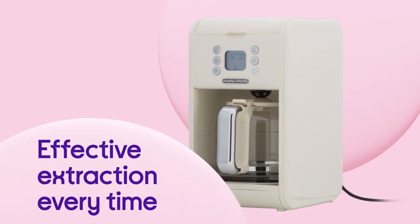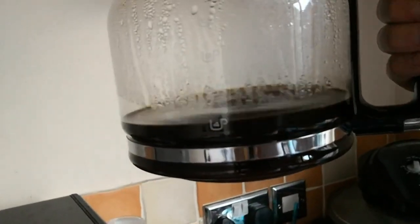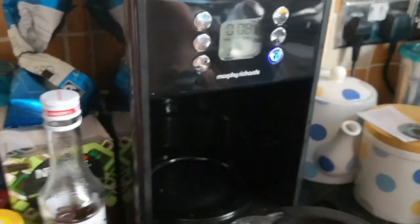But with its slower brewing process, using the pour-over Morphe Richards 163007 machine is more time-consuming than using the Ego Star Benno 30YWZ.